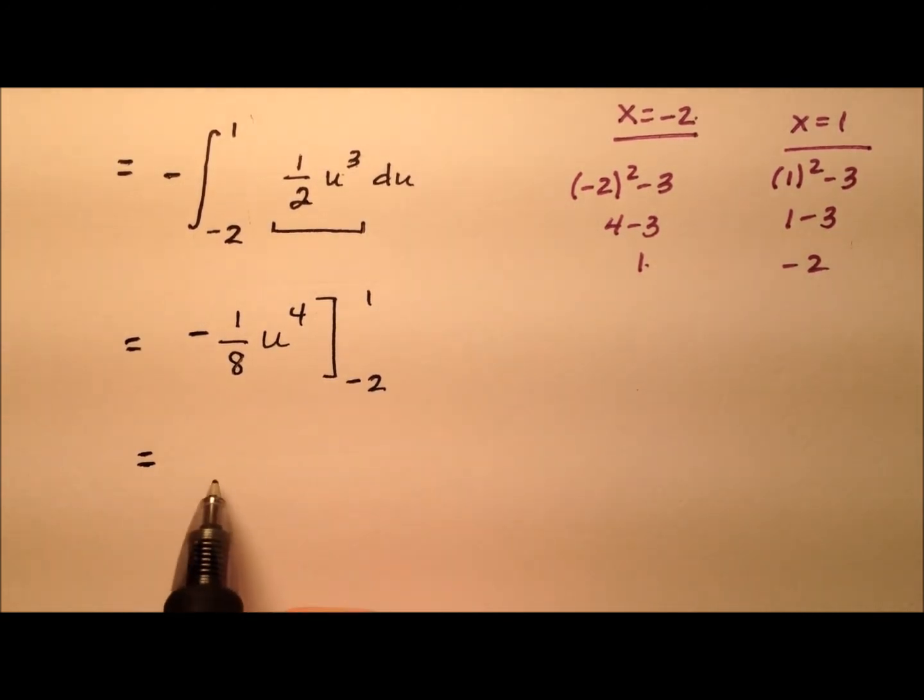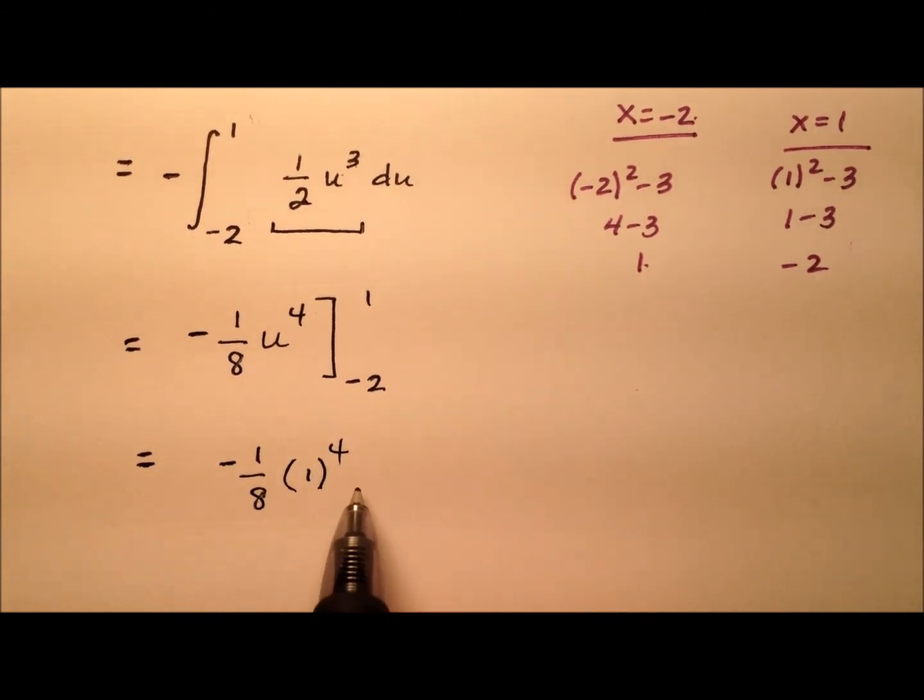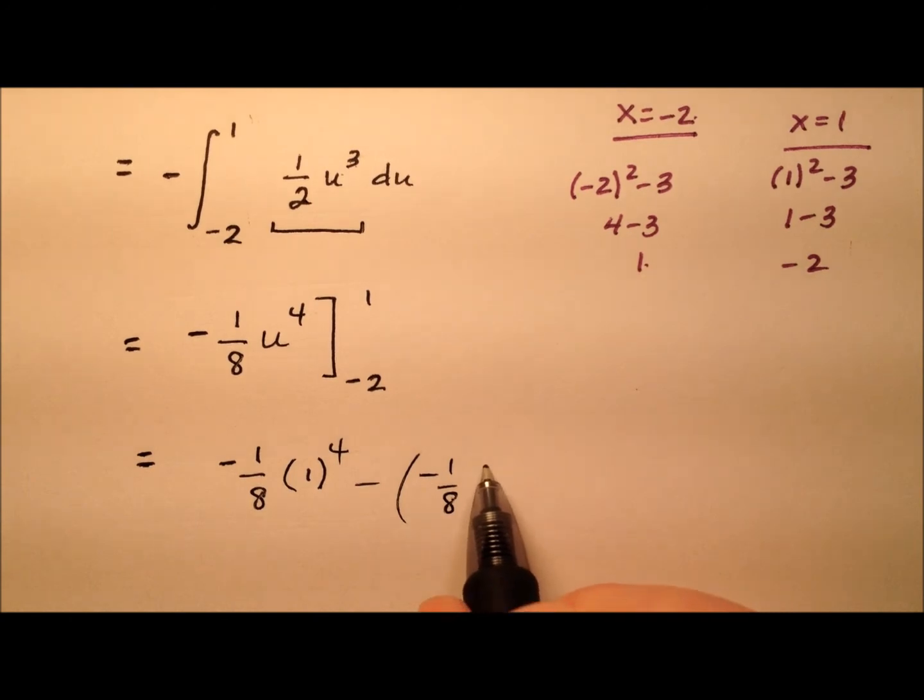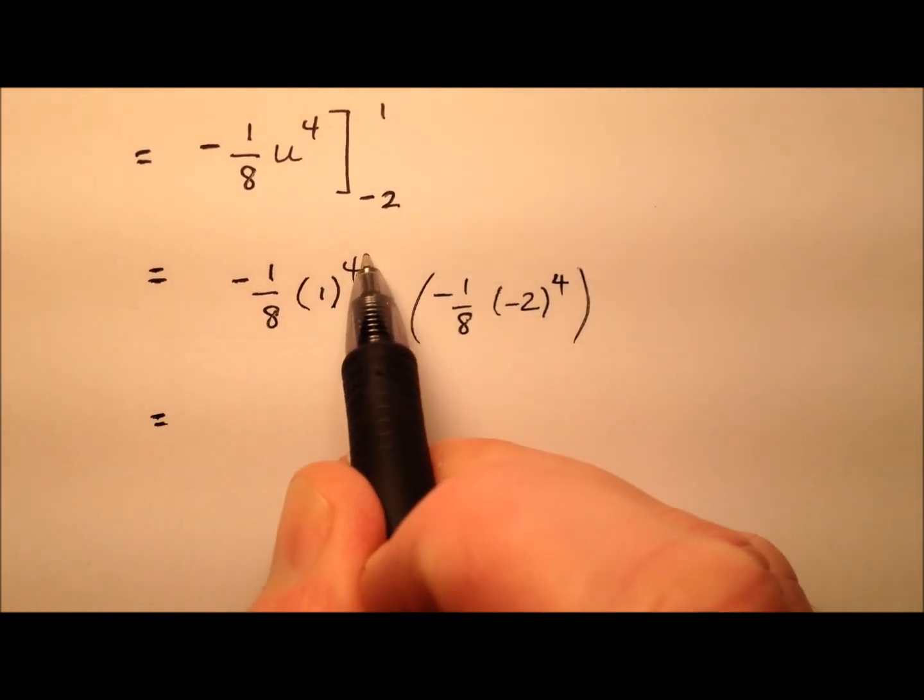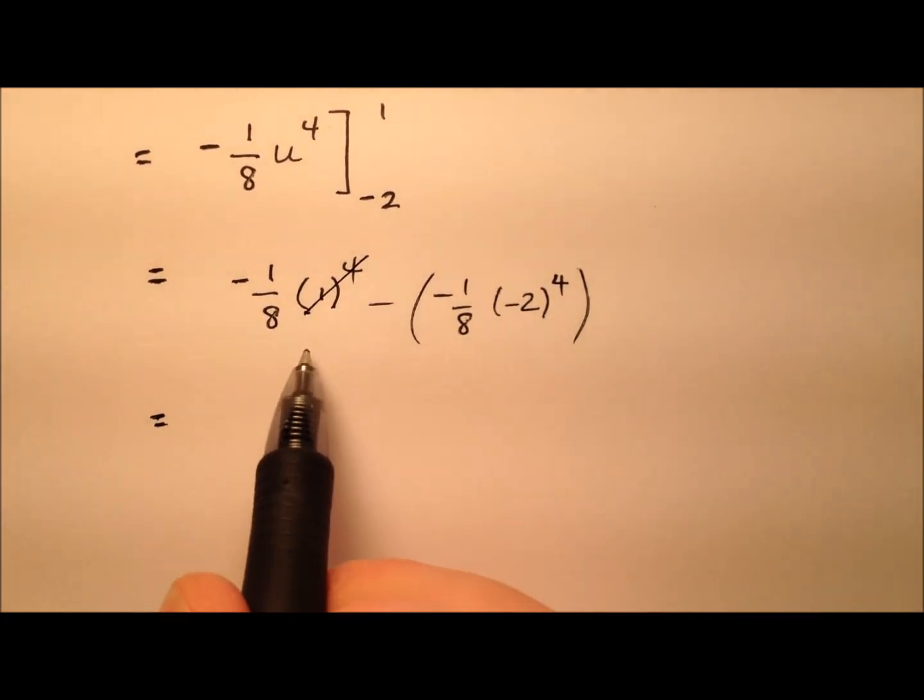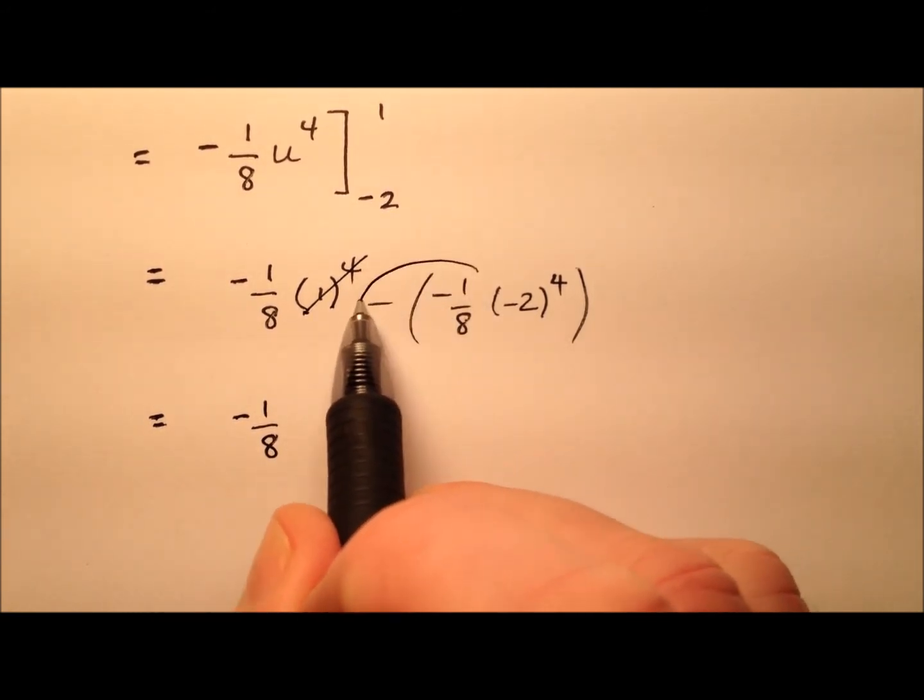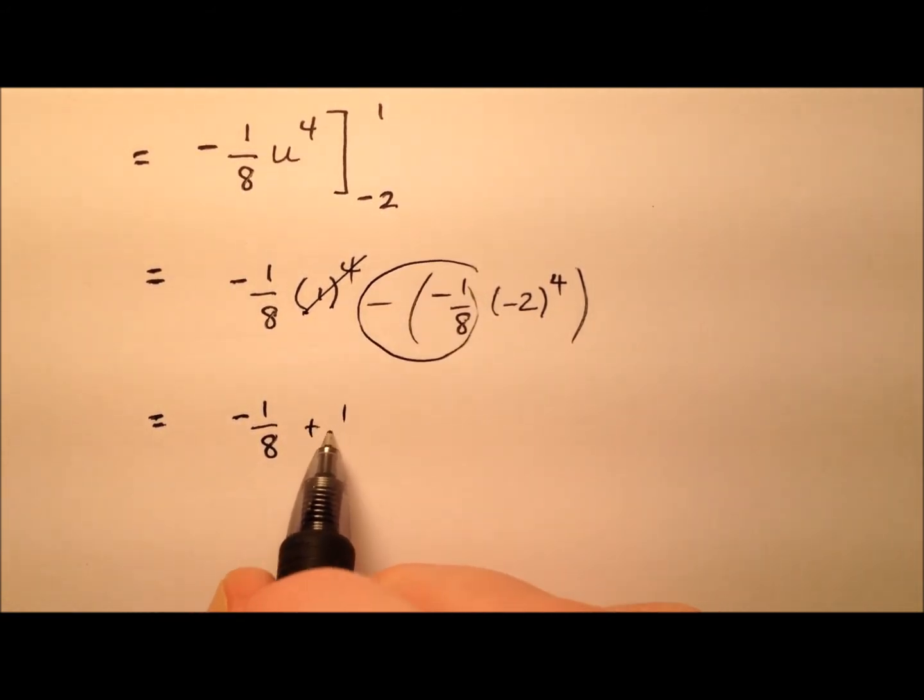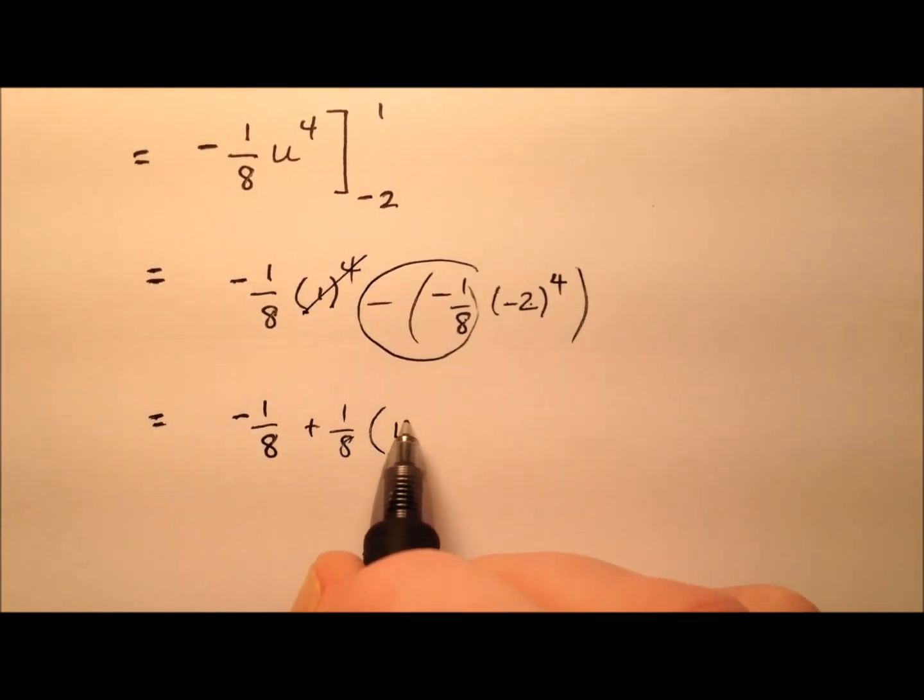So let's see what this ends up being. So we have negative 1 eighth, 1 to the power of 4, minus negative 1 eighth, negative 2 to the power of 4. And 1 to the 4th, well that's just 1, and negative 1 eighth times 1, that's just our negative 1 eighth. And here we'll have plus 1 eighth times negative 2 to the 4th, which is going to be positive 16.